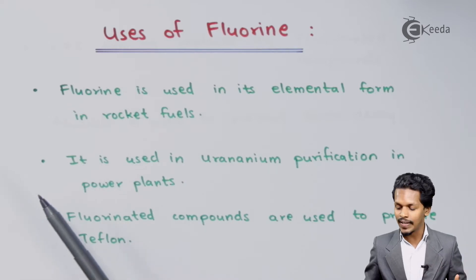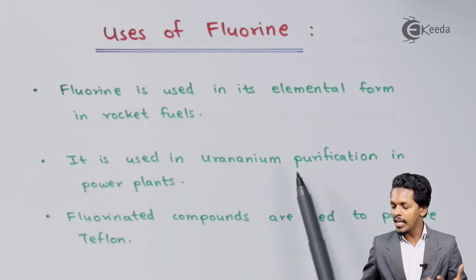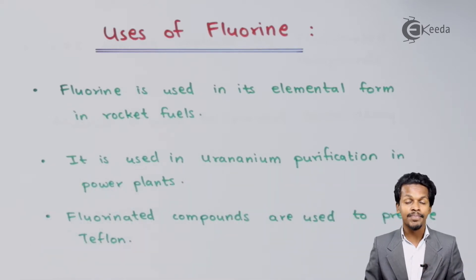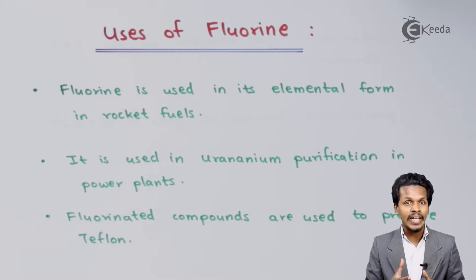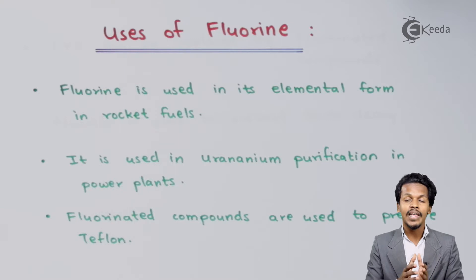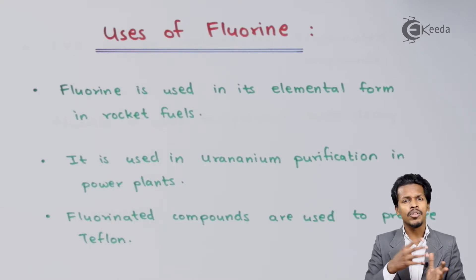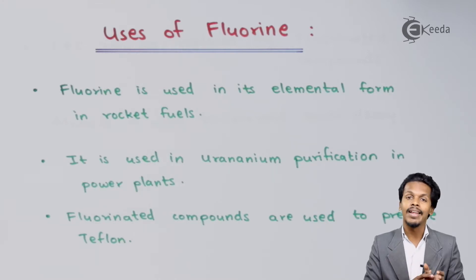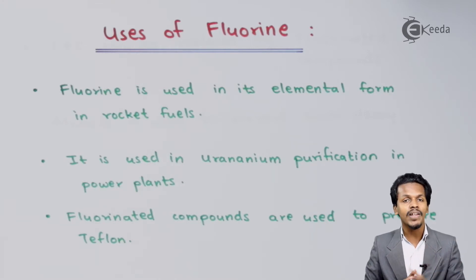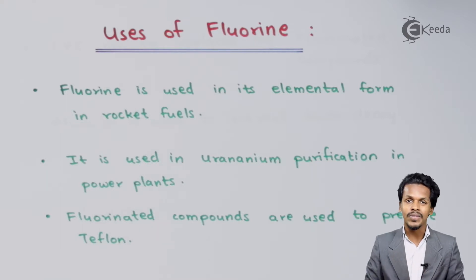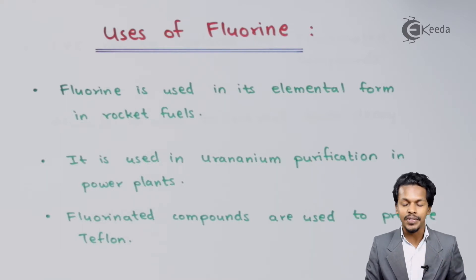Talking about the next use: fluorine is used in uranium purification in power plants. Uranium is very reactive and very rare. To obtain pure uranium and to get a tremendous amount of energy from it, we have to purify the uranium, and fluorine is used to purify those elements or mixtures.